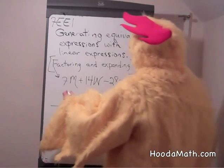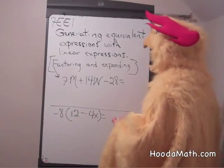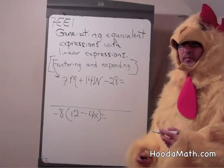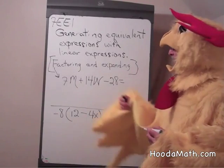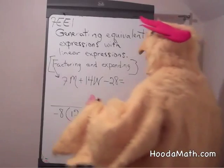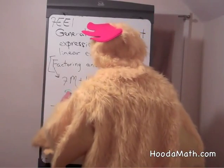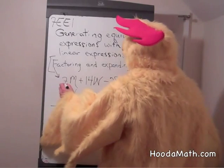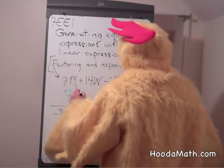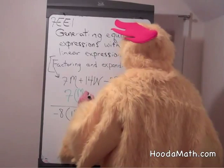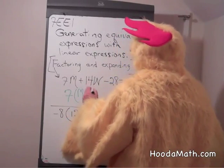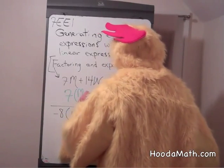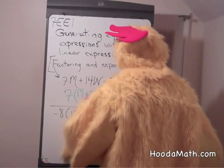When we look at this expression, 7m plus 14w minus 28, we look for a common factor. The common factor in the three terms is 7. We put that outside of parentheses. 7 into 7m goes m times. 7 into positive 14w goes 2w.